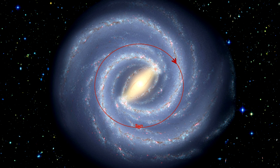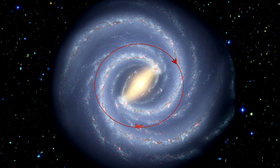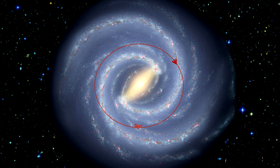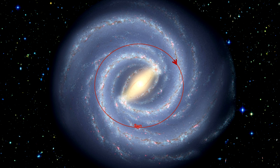Here we see the Sun's orbit around the galactic center. Our orbital speed is approximately 138 miles per second, and it takes the solar system about 225 million years to complete one orbit. The last time we were in the same place in our orbit, dinosaurs were just starting to appear on Earth. We have traveled one one-thousandth of a revolution since the origin of humans.